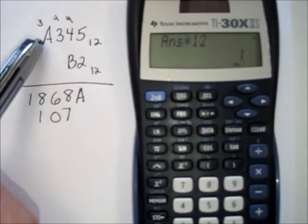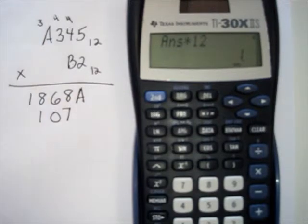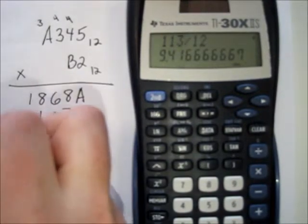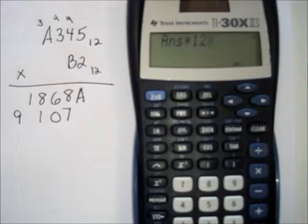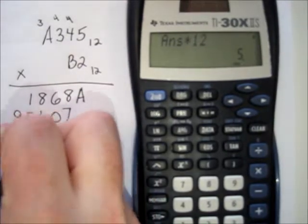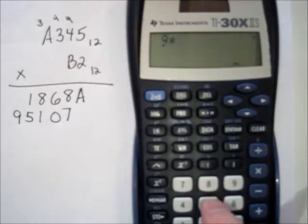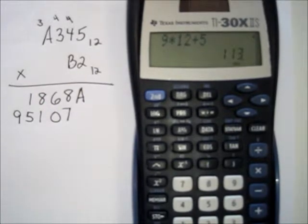This last one is a big one: eleven times ten is 110, plus three is 113. So we've got 113 — divide by twelve to get nine twelves. Subtract the nine and multiply back by twelve to get a remainder of five. You can verify: nine times twelve plus five does equal 113. So it's nine-five in base twelve.